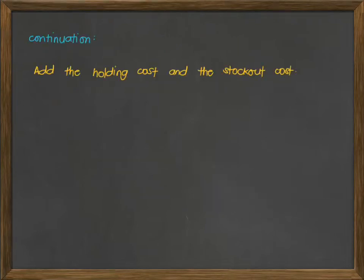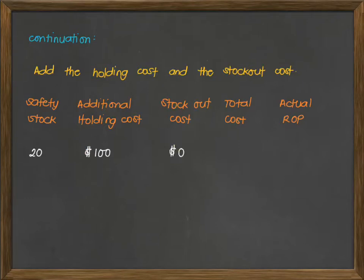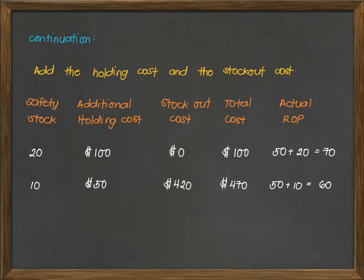To summarize, we add the holding cost and the stock out cost. Rewriting our table with columns for safety stock, additional holding cost, stock out cost, total cost, and actual reorder point: for a safety stock of 20, there is an additional holding cost of $100 but no stock out cost, giving a total cost of $100 and an actual ROP of 70 units. For a safety stock of 10, there is a $50 additional holding cost and a stock out cost of $420, totaling $470, with an actual ROP of 60 units.